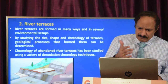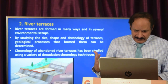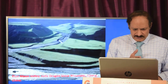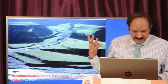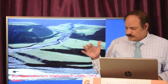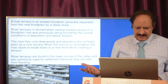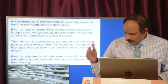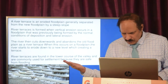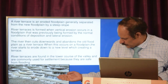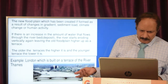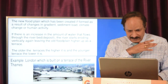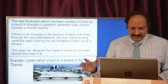River terraces are a very important method of denudation chronology — they are formed in many ways and in several environmental setups, and their chronology has been studied in many places using a variety of techniques. An example is the Blue Moon Valley at Jade Dragon Snow Mountain in Yunnan, China, where denudation chronology was deduced from river terraces. A river terrace is formed when vertical erosion occurs in a flood plain, the river cuts downwards and abandons the old flood plain, creating a new level. The older the terrace, the higher it is; the younger the terrace, the lower it is. In fact, London city is built on the river terraces of the River Thames.